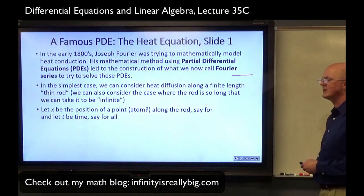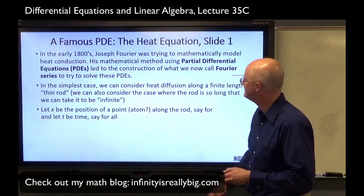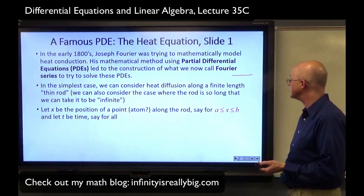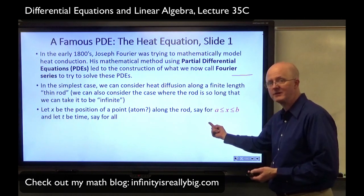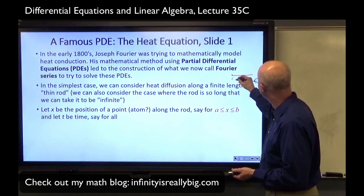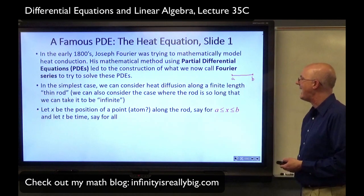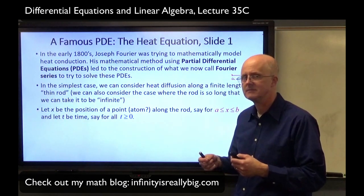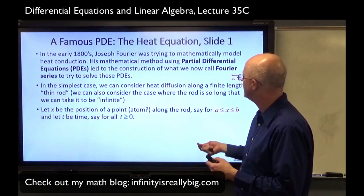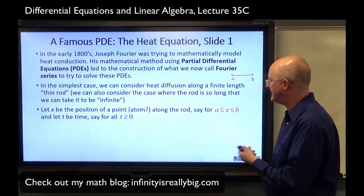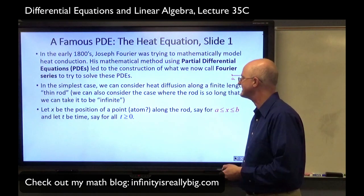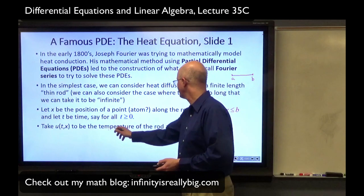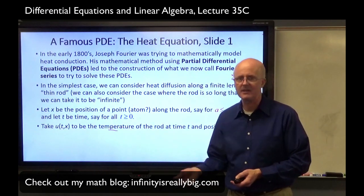Let X be the position of a point. It's an idealized point along the rod. Say for X between A and B. A is the X-coordinate of the left-end point of the rod, and B is the X-coordinate of the right-end point of the rod. And let T be time, for all T greater than or equal to zero. If you're thinking about this kind of thing in real life, you need to think about units of temperature. Units for X could be meters or centimeters. Units for T, probably one second.